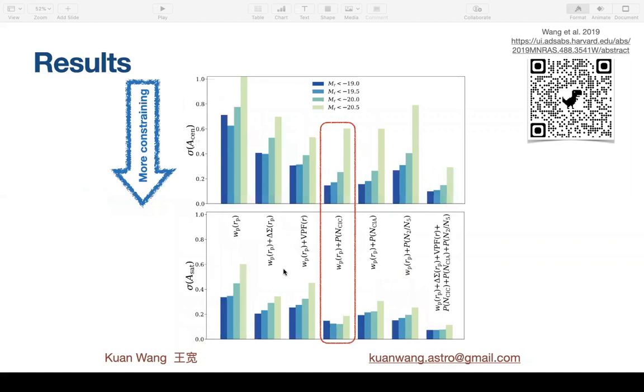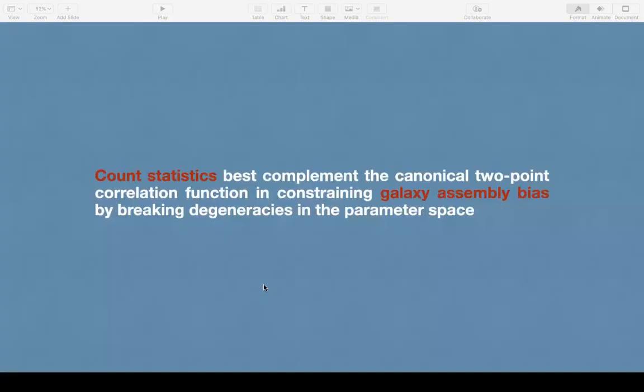So this figure shows the 1D constraints on the assembly bias parameters, A_cen and A_sat, from different combinations of observables. Note that the galaxy number density is always included with WP. So here, shorter bars mean tighter constraints, which is preferable. And count statistics, all three of them—counts in cylinders, counts in annuli, the ratio of counts—they outperform weak lensing delta sigma, which is the second group of bars, in all the samples and for both parameters. And also, WP plus any of the three count statistics performs similarly to the combination of all six together. So the conclusion is that count statistics are a better complement to the two-point function.